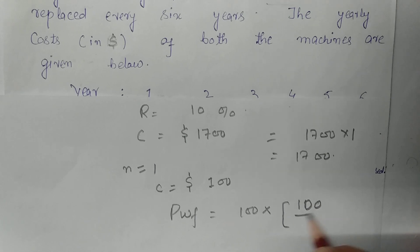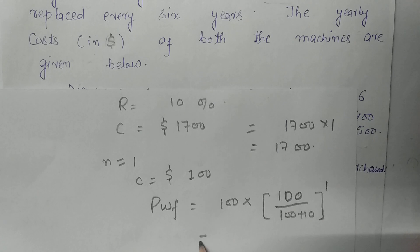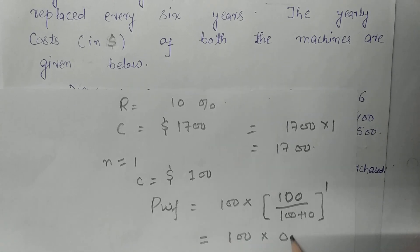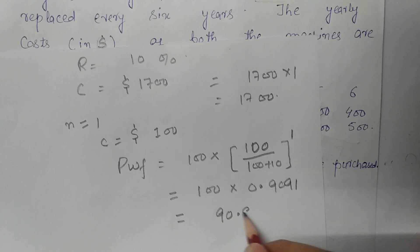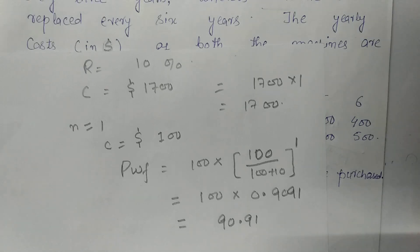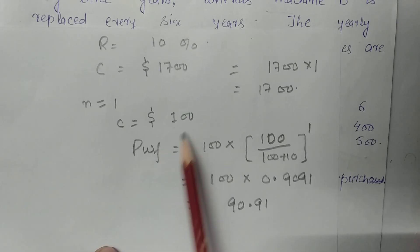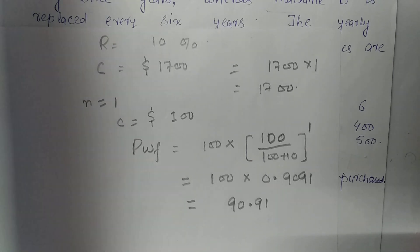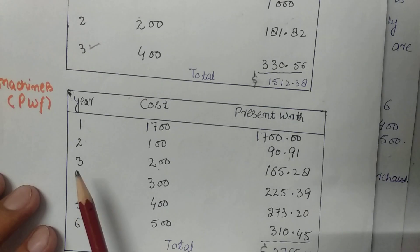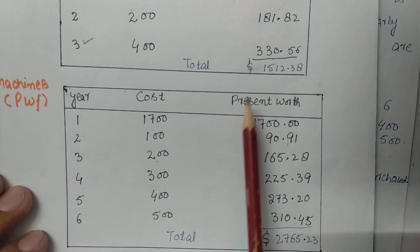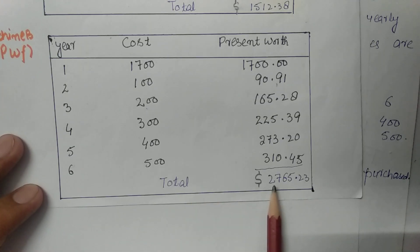After simplifying, the present worth of one hundred dollars after one year at 10% interest becomes ninety point nine one dollars. Similarly for n equals 2 through n equals 5, that is years two through six, you calculate the present worth in the same manner. After completing all calculations, the total present worth for machine B over six years comes out to be twenty seven hundred sixty five point two three dollars.